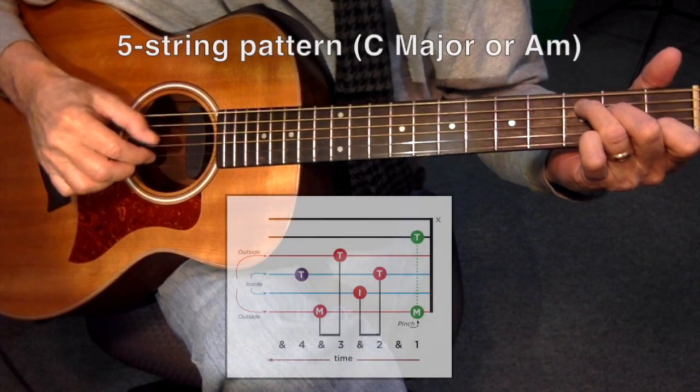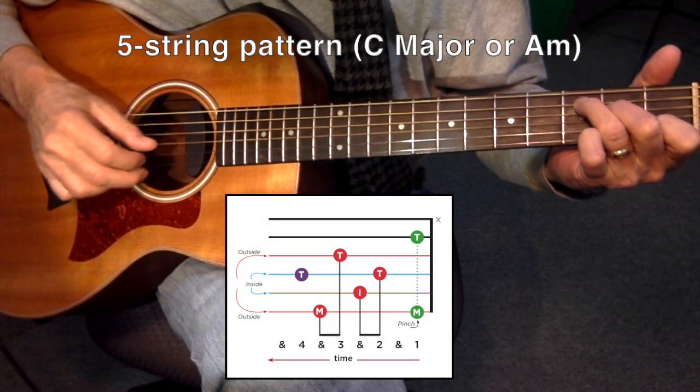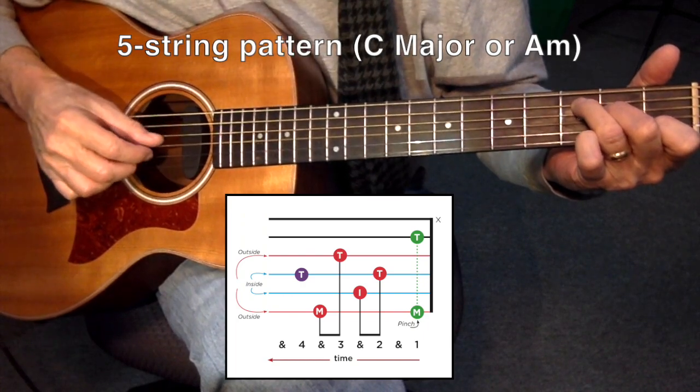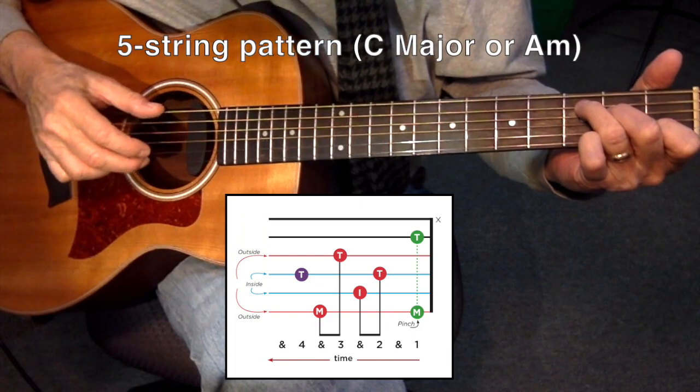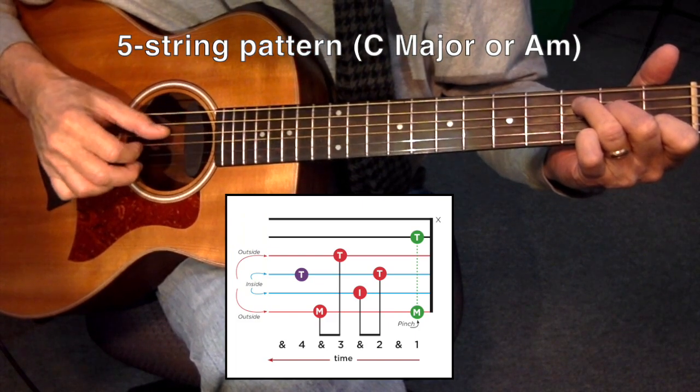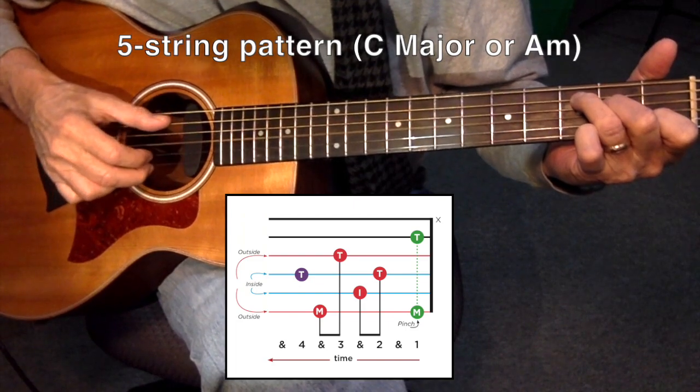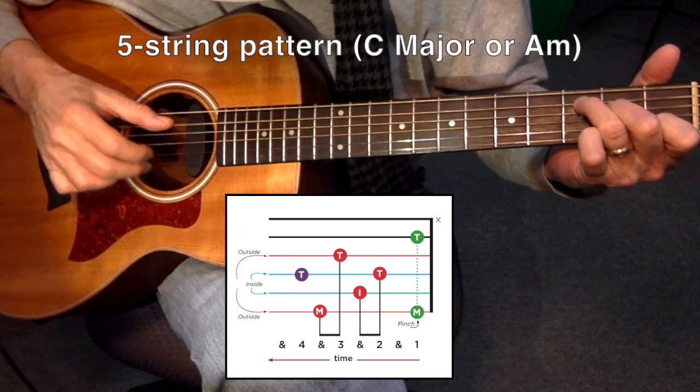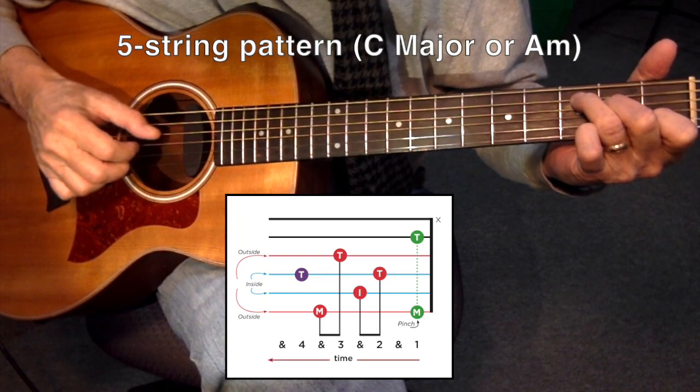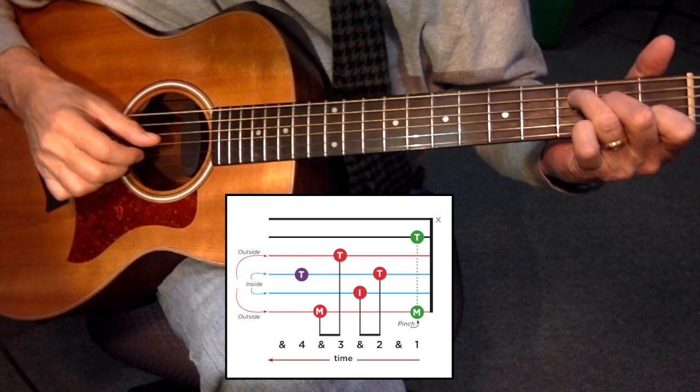For the five string pattern, you start out by plucking the bass note with the thumb and the high E string starting with the middle finger on the pinch, and then do the internal rolling of those four high strings, the thinnest strings, starting on the red with the thumb and index finger on the inside pair, and then the thumb and the middle finger on the outside pair, and then complete it with that thumb on the G string. That's how every bar ends.